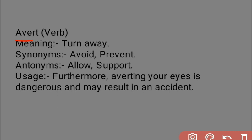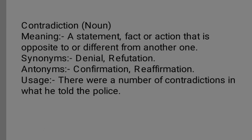Next word is 'avert,' a verb meaning to turn away — to avoid or prevent something. Its synonyms are avoid and prevent, and antonyms are allow and support. For example: 'Averting your eyes while driving is dangerous and may result in an accident.' This is the word avert. The next word is 'contradiction,' a noun.